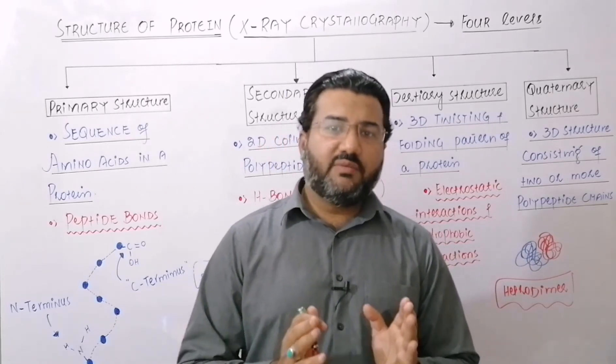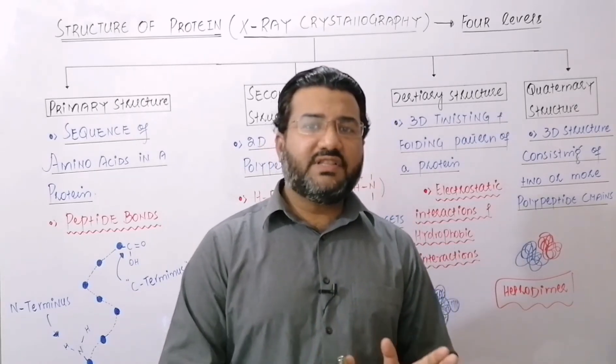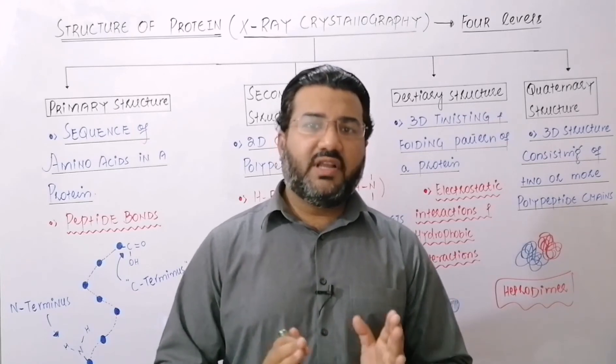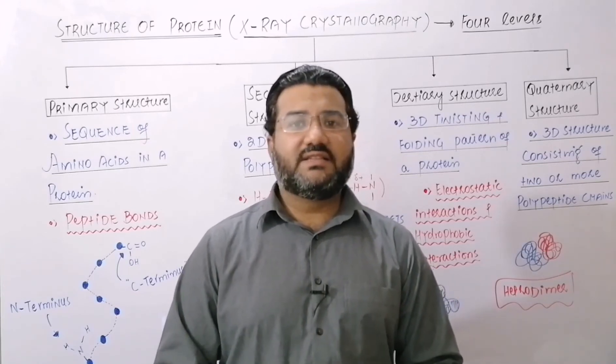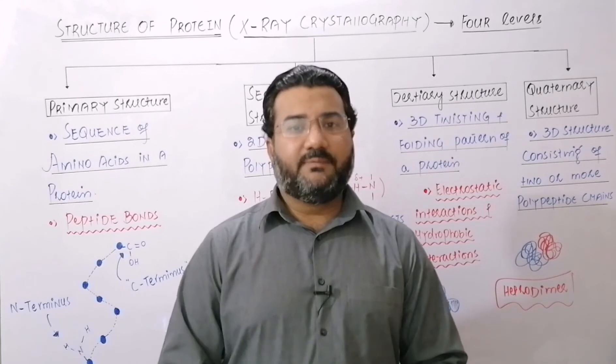In the case of hemoglobin, there are four chains — two alpha chains and two beta chains — so the quaternary structure of hemoglobin is an example of the hetero tetramer.